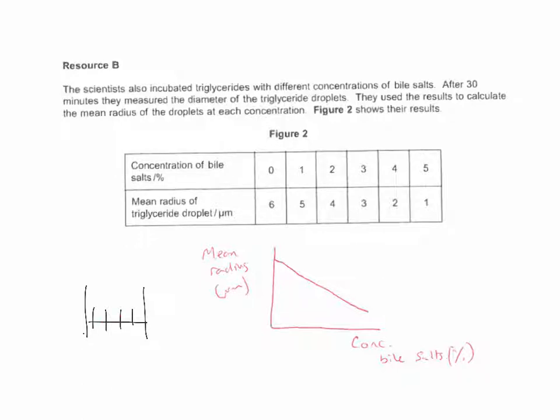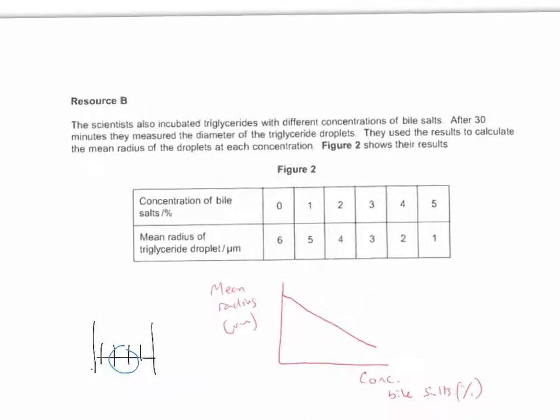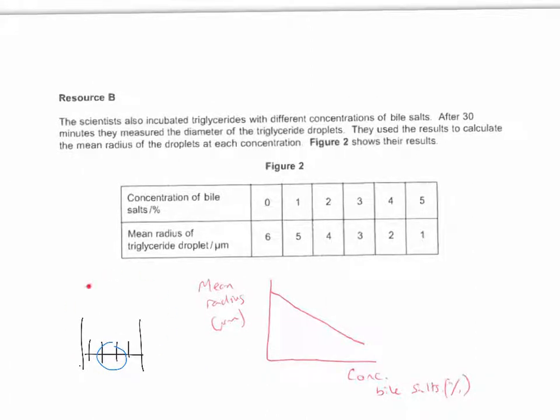But in the eyepiece graticule, you don't know what each of the subdivisions are worth, and they vary depending on the magnification. So if you had a triglyceride droplet like this that you're trying to measure, the first thing you need to do is calibrate the eyepiece graticule. So calibrate this so that you know what each division is worth. So you calibrate the eyepiece graticule with a stage micrometer.